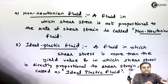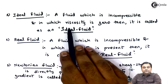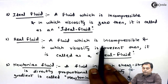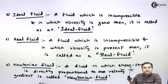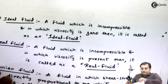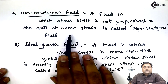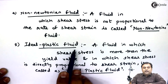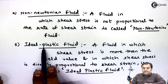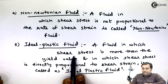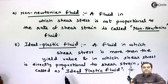To summarize, the five types of fluid are: ideal fluid — incompressible with zero viscosity; real fluid — incompressible with viscosity present; Newtonian fluid — shear stress directly proportional to velocity gradient, following Newton's law of viscosity; non-Newtonian fluid — shear stress not proportional to shear strain, not following Newton's law; and ideal plastic fluid — shear stress exceeds yield value and is directly proportional to shear strain, following Newton's law but with shear stress above yield value.